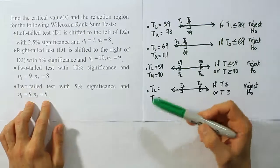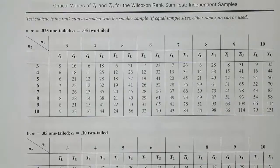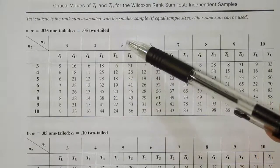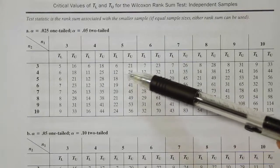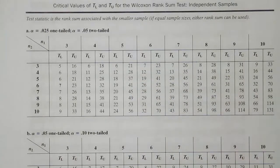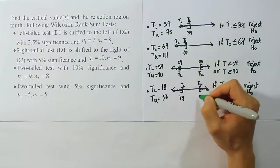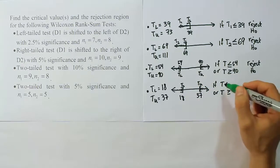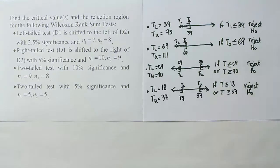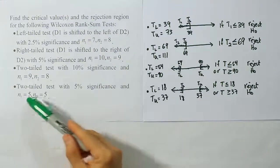On the Wilcoxon rank sum table at 0.05 in two tails with N1 equals 5 and N2 equals 5, we get TL equals 18 and TU equals 37. So if T is less than or equal to 18, or greater than or equal to 37, we reject the null hypothesis. Remember, T can be either T1 or T2 since the sample sizes are equal.